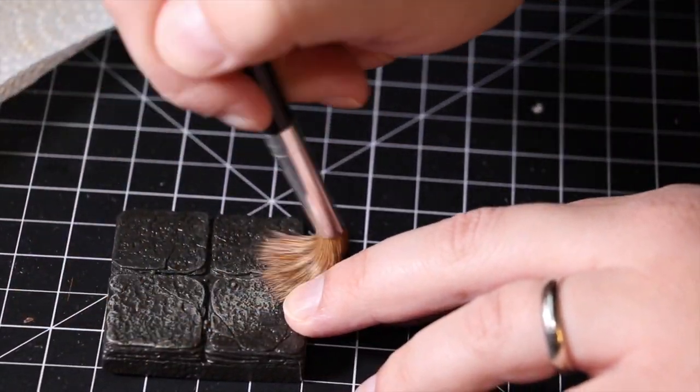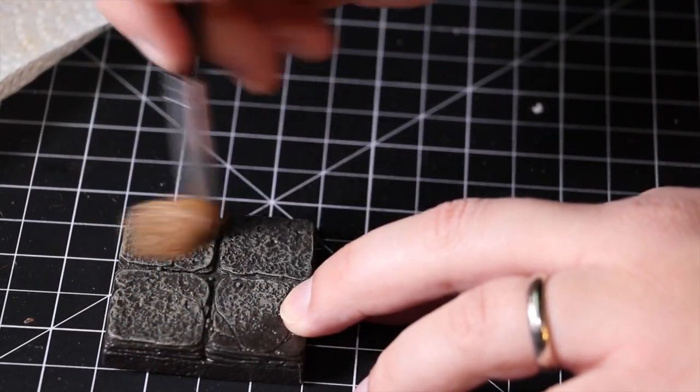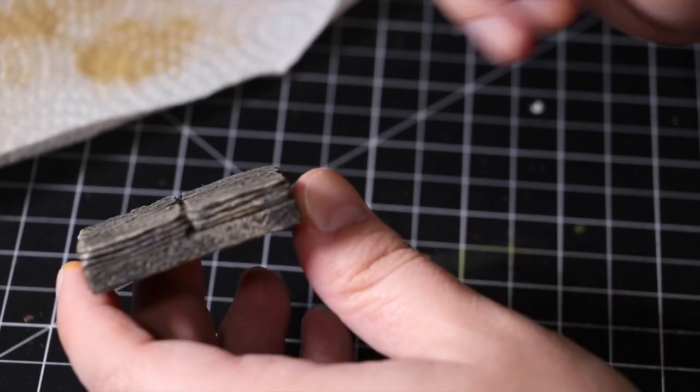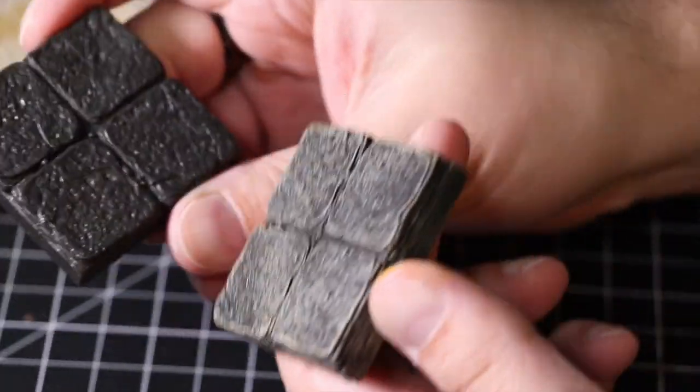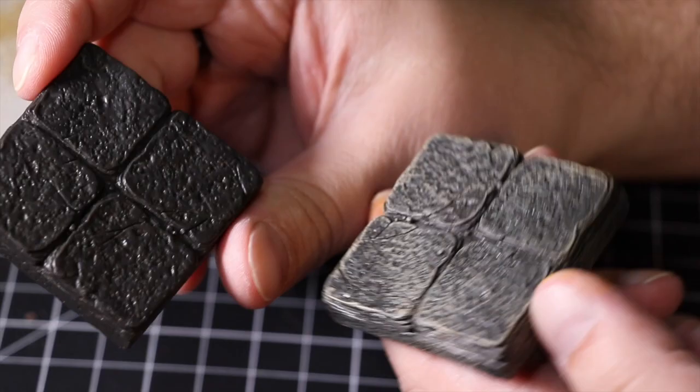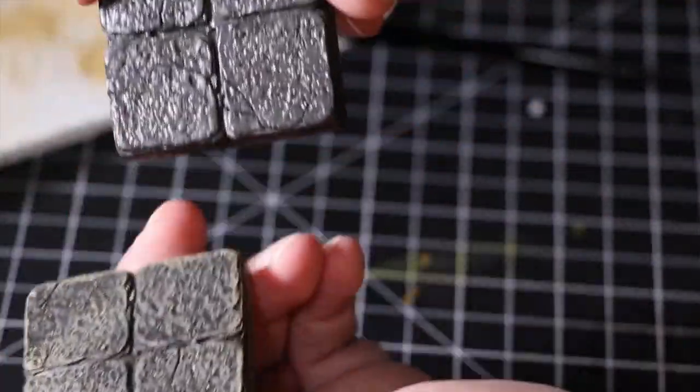Here you can see where we're dry brushing some of the floors and just the big difference it makes. You want to make sure you get all sides of it, top, all the edges. You can see how it compares to the unpainted one and just how nice they look with that.